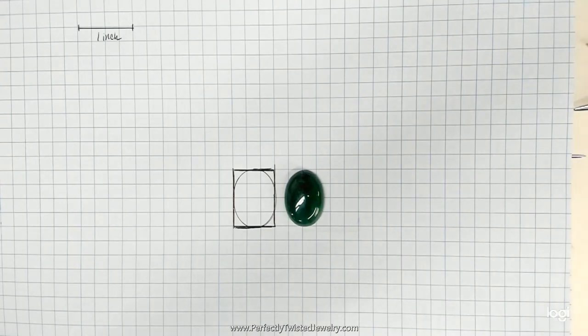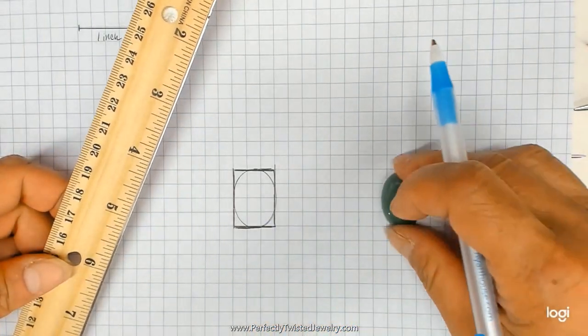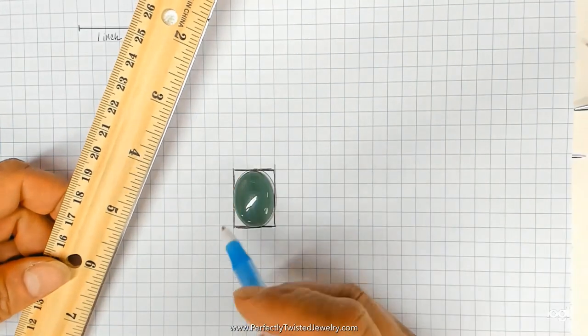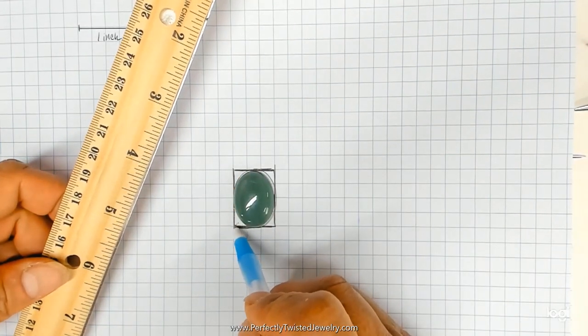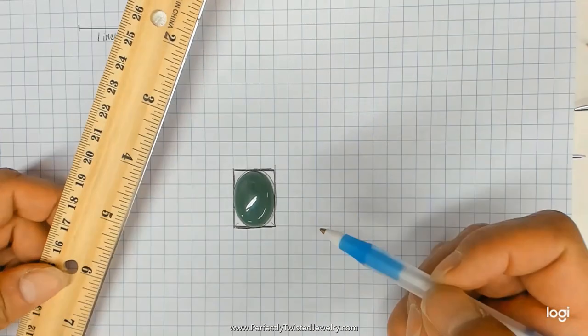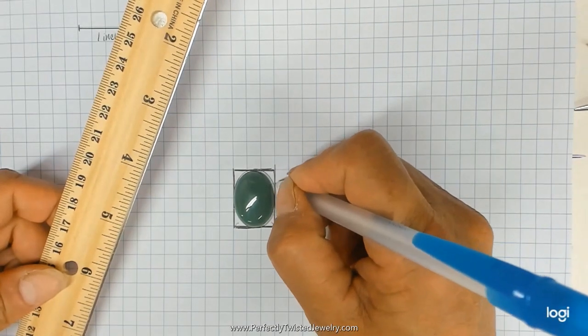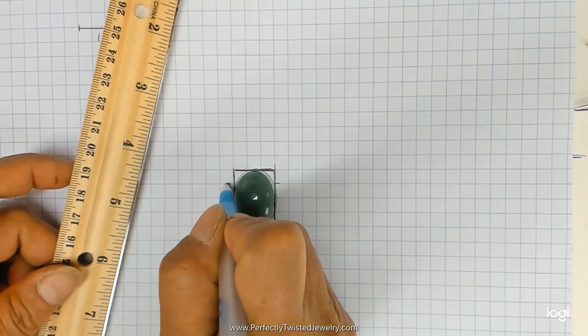So in the case of this oval cabochon, I think I would want a prong about here and here at the base of it and I might also want a prong here and here.